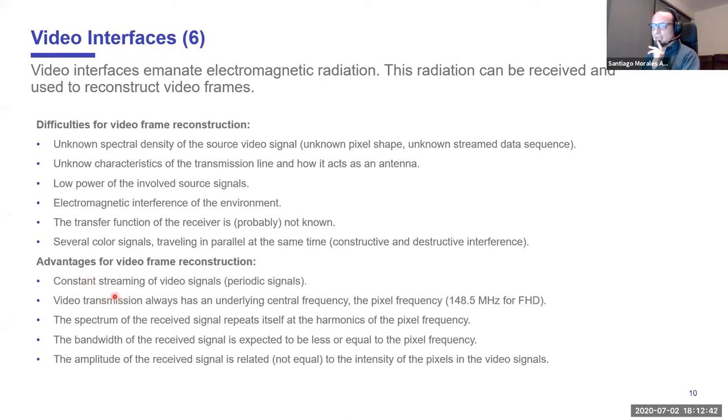These are the difficulties that make the system work like a black box. But we also have some advantages. We know that there is a streaming, a constant streaming of video signals. We know that if we are seeing information on the display monitor, there is information traveling through the cable. Also, we know that there is an underlying central frequency. This frequency for full HD is 148.5 megahertz at 60 hertz refresh rate.